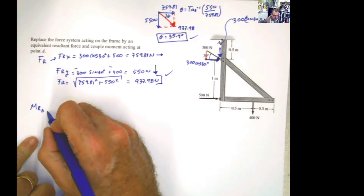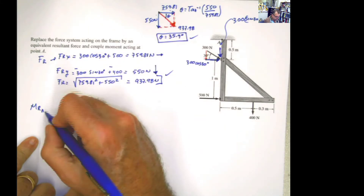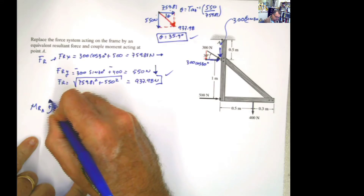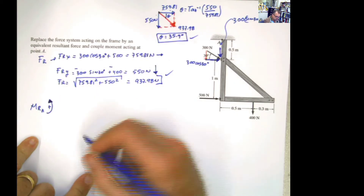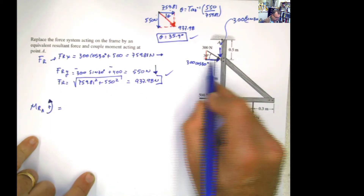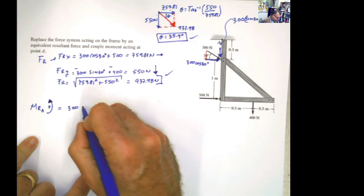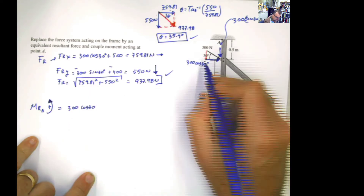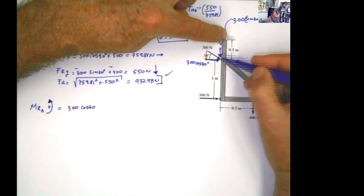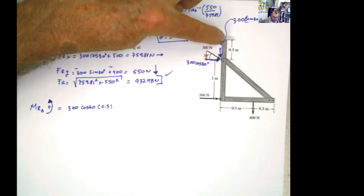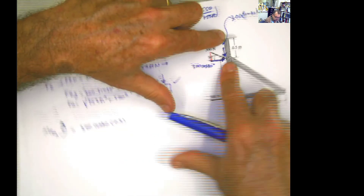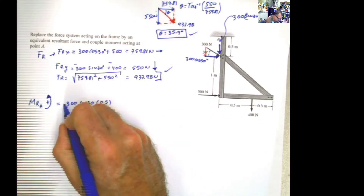The second part is summation of moments. You need to establish a convention: counterclockwise rotation will be positive. Starting with the 300 cosine 30 component — the force is horizontal, so I need the vertical distance between that force and point A, which is 0.5. Putting your finger at the point and applying the force, you can see the rotation happens counterclockwise, which is positive according to our convention.